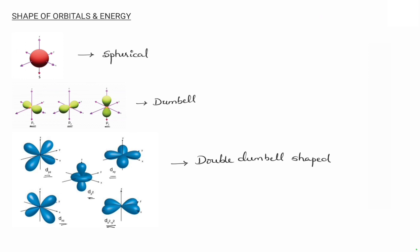The size of all these orbitals increases with an increase in the value of n. So we can write that 4s is greater in size than 3s, which is greater than 2s, which is greater than 1s. Similarly for p orbitals, as the size of the orbital increases, the energy also increases: 4p > 3p > 2p. The same applies for d orbitals.